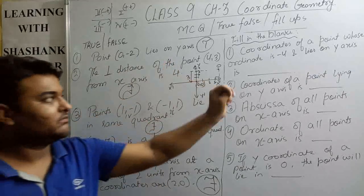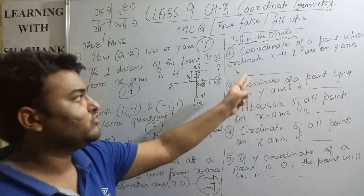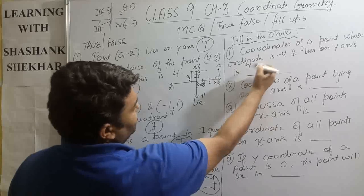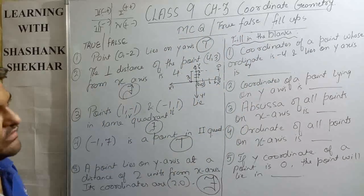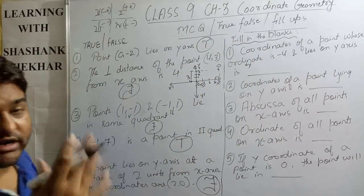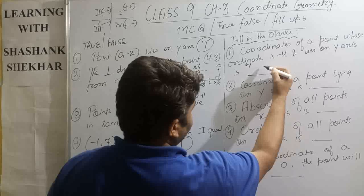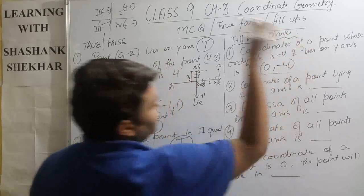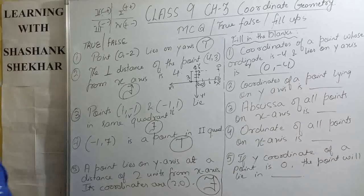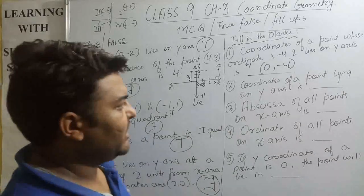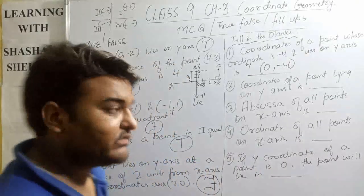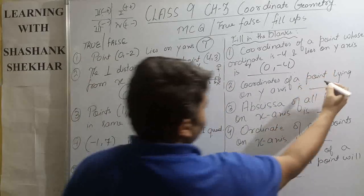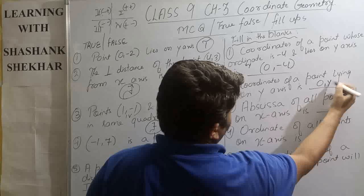Now fill in the blanks. Question one: coordinates of a point whose ordinate is minus 4 and lies on the y-axis. On the y-axis, x is equal to 0, so the point is (0, -4). Question two: coordinates of a point lying on the y-axis will be (0, y) — because on the y-axis, x is always equal to 0.